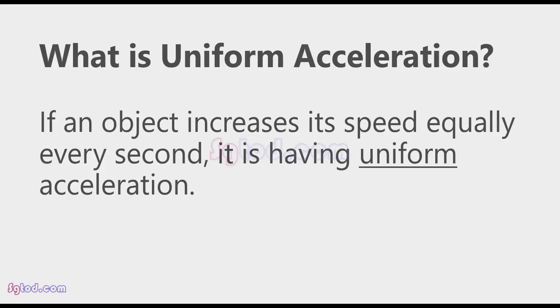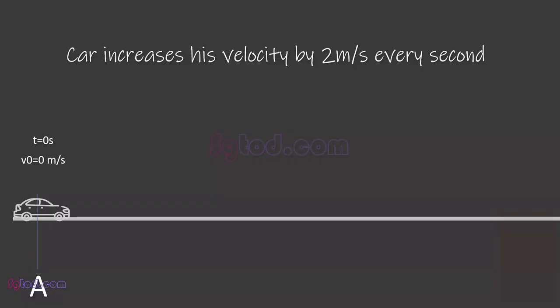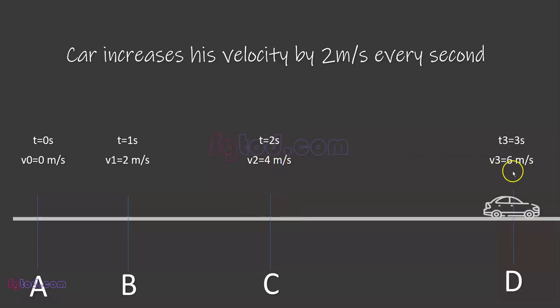If an object increases its speed equally at every equal time interval, it is having uniform acceleration. Here's the illustration. The car starts from rest, and after one second, its velocity reaches 2 meters per second. It continues to increase its velocity by 2 meters per second every second.